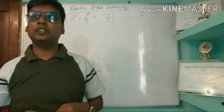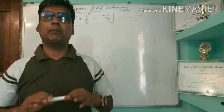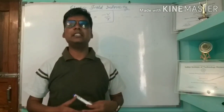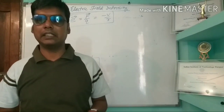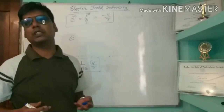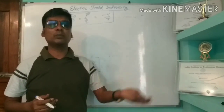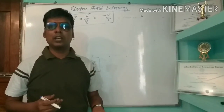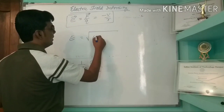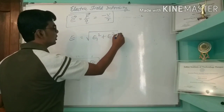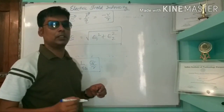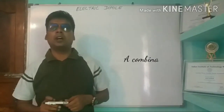The electric field due to a set of charges may be obtained by finding the field due to each individual charge and then adding these fields according to the rule of vector addition. So according to vector addition, if two components have electric field intensities E1 and E2, then the total electric field equals root under E1 squared plus E2 squared. Now, electric dipole.